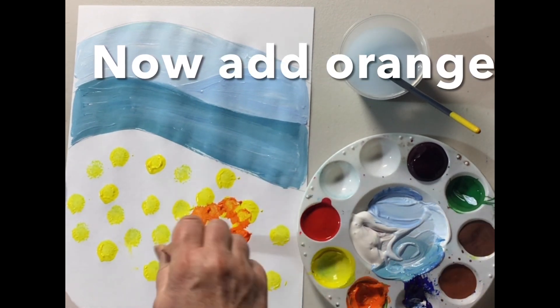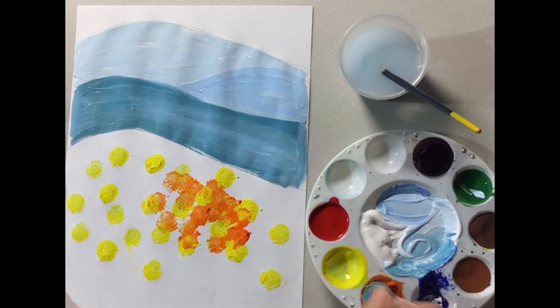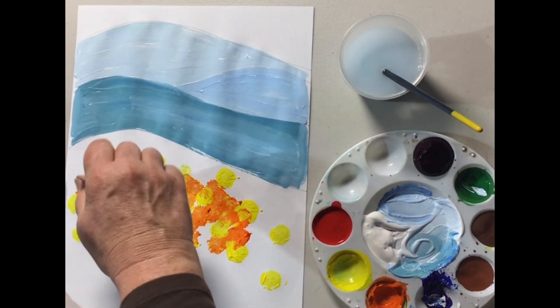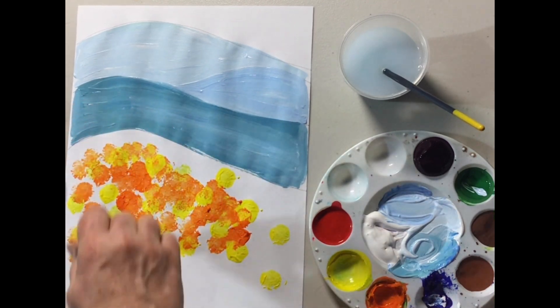Let's use orange. I'm going to go between and stamp. So I'm mixing on the paper. Yes, I am. I'm going to mix the yellow and the orange.